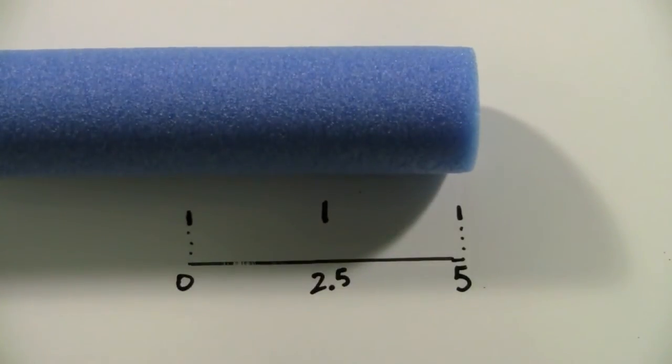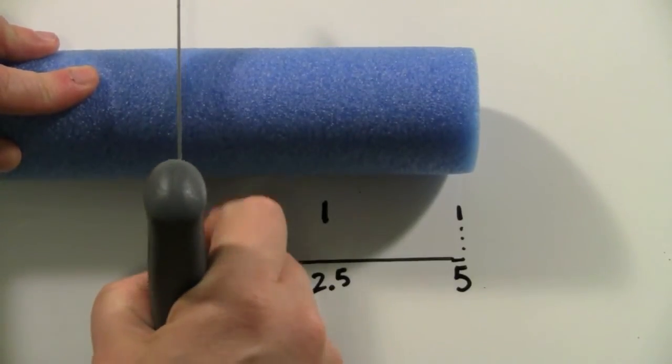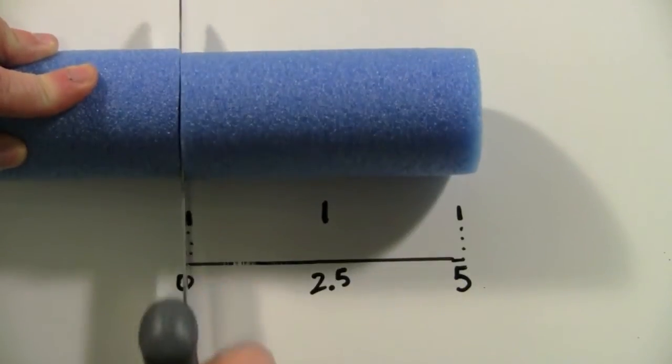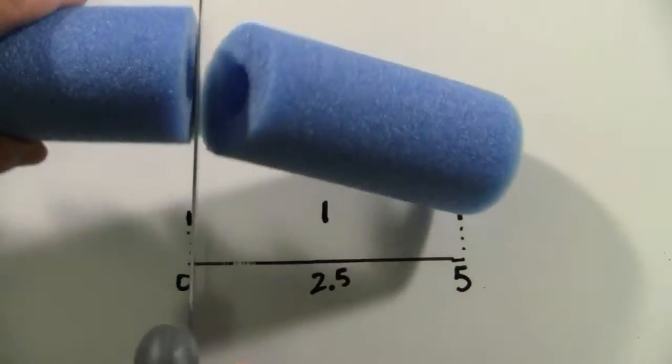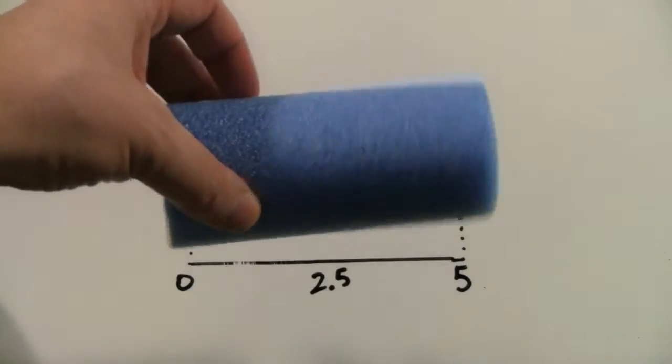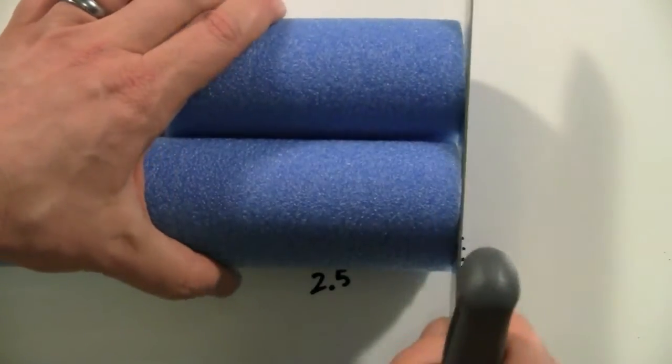Here we are with our pool noodle. We're going to measure out about five inches or so and get our serrated knife out. We're just going to start slicing through very carefully, trying to make sure that we're absolutely vertical as we cut through. We're going to make two of these little pieces. Here's our first little piece, about five inches long.